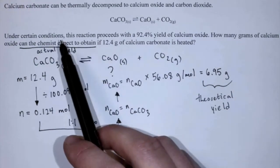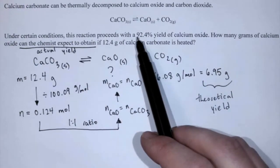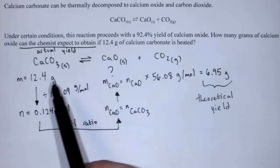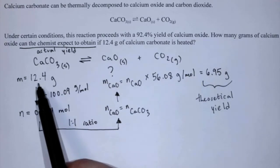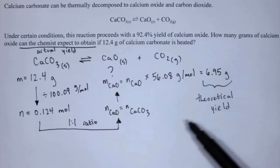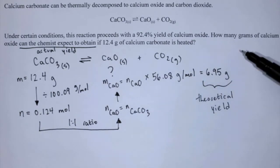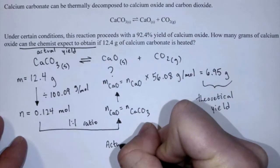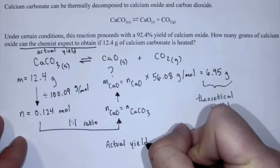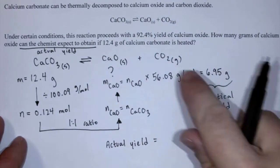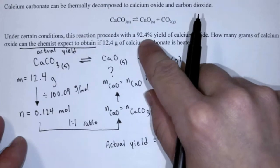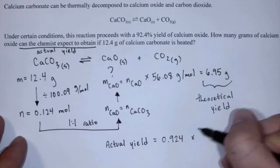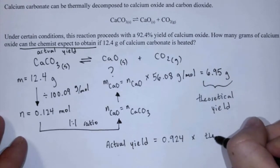This problem says under certain conditions the reaction proceeds with a 92.4% yield of calcium oxide. So using 12.4 grams of calcium carbonate, how much could we reasonably expect? Now we're going to find the actual yield. To find the actual yield, we first convert our percent yield into a decimal — that would be 0.924 — and multiply it by the theoretical yield.